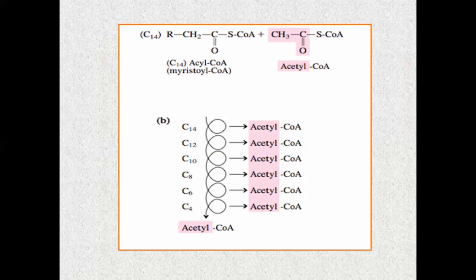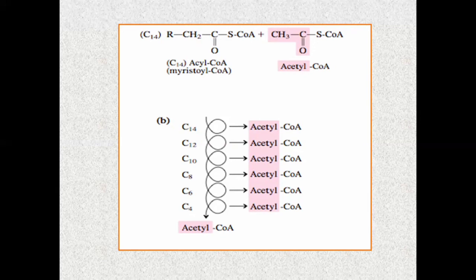This was about the overall view of beta-oxidation. The detailed mechanism of each step will be studied in other lectures. The fatty acid oxidation process is divided into three steps: beta-oxidation is the major pathway, with alpha-oxidation and omega-oxidation as minor pathways. Beta-oxidation is related to three steps in the process.